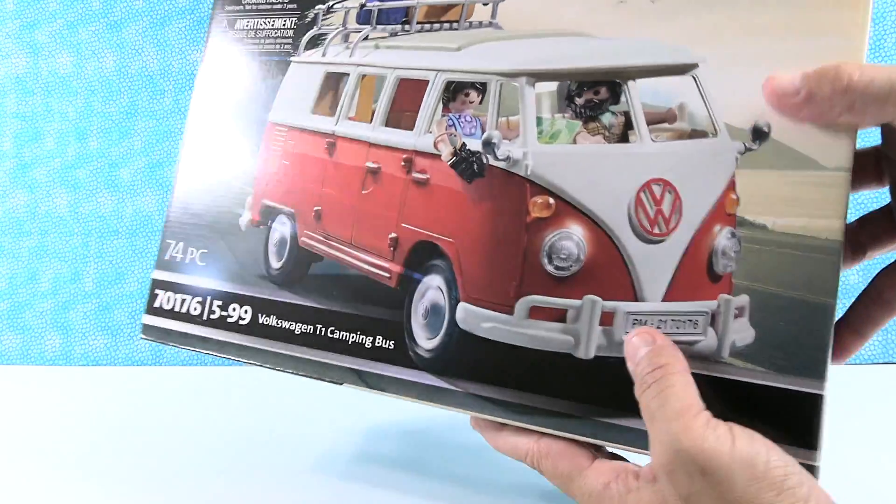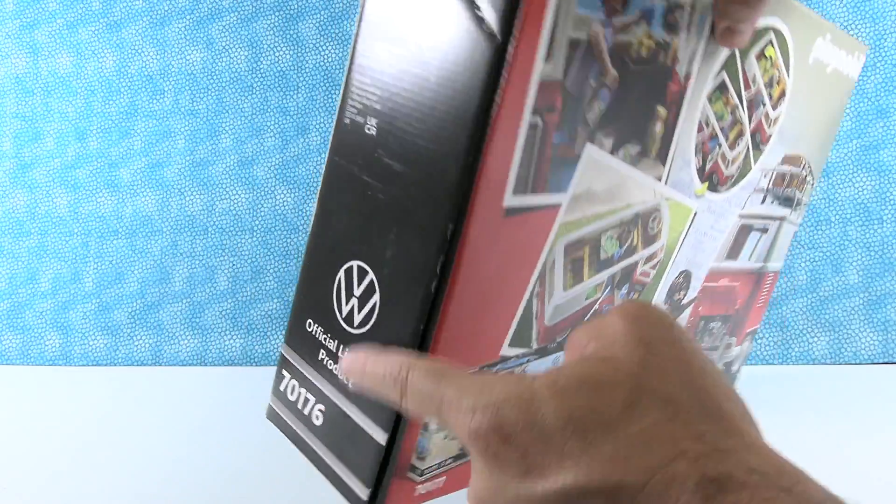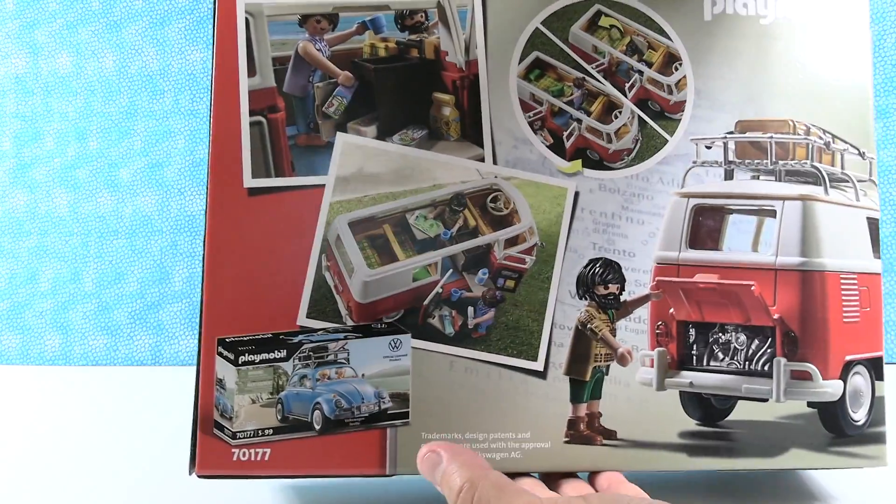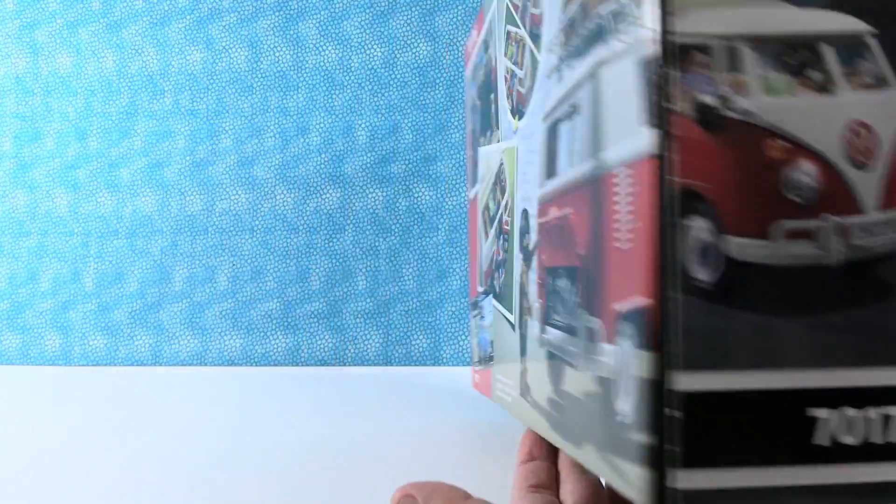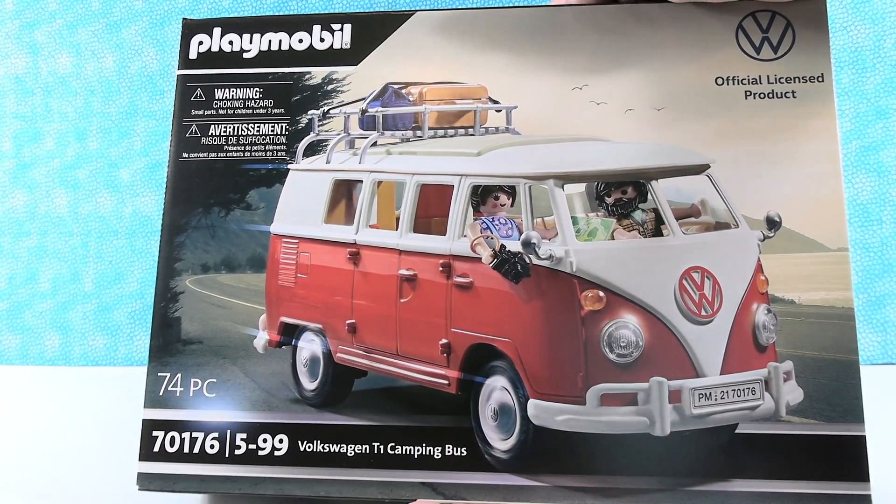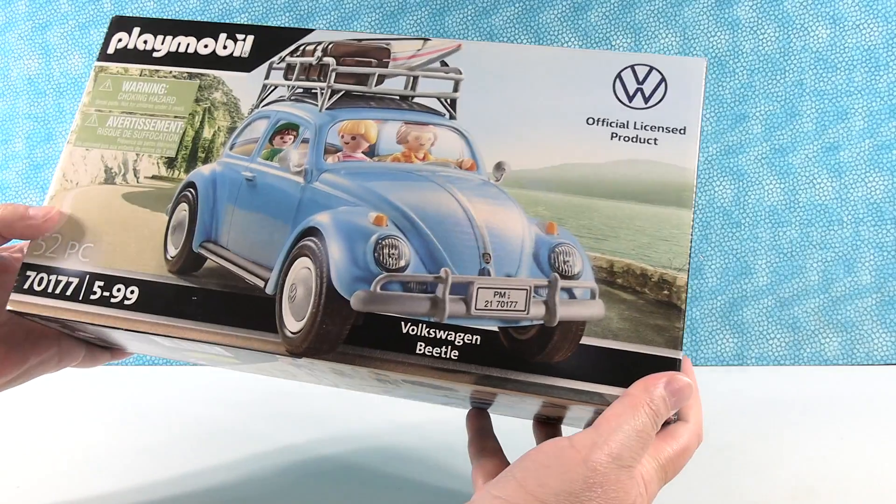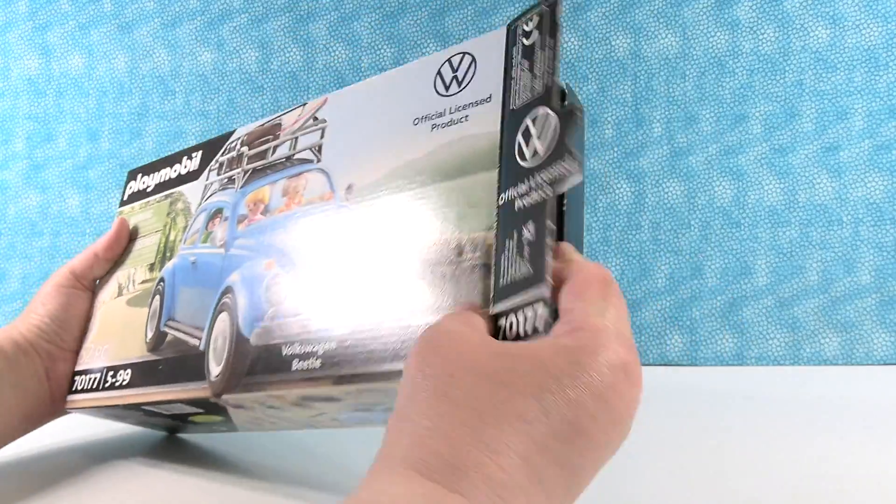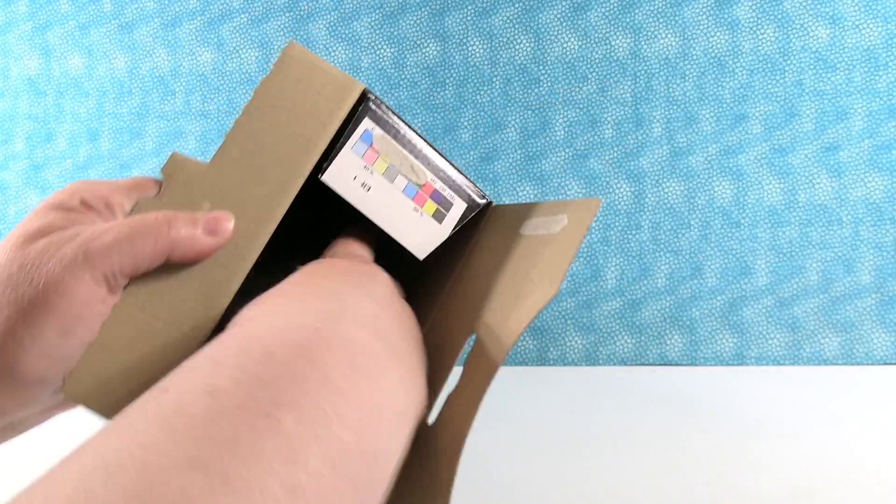This packaging is just amazing looking. It looks very clean. The colors, the pictures, that's going to be awesome for the collector. I think we're going to need to keep one sealed and build one. Let's go ahead and open up the Volkswagen Beetle first and see what's inside.